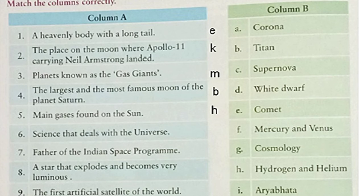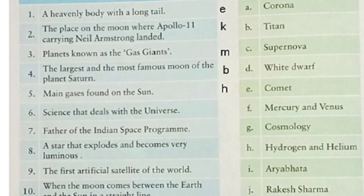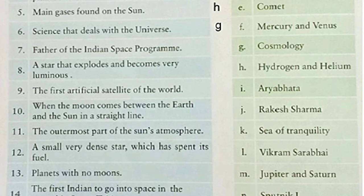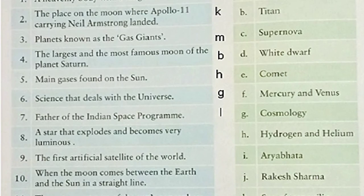Now let's see question number 6: science that deals with the universe. It is called cosmology and it is given in point G. Now let's read out number 7: father of the Indian Space Program. He is Vikram Sarabhai and it is given in point number L. Now let's move to question number 8: a star that explodes and becomes very luminous. It is called supernova and the answer is given in point C. So, we will write C here.